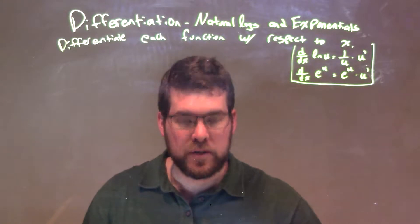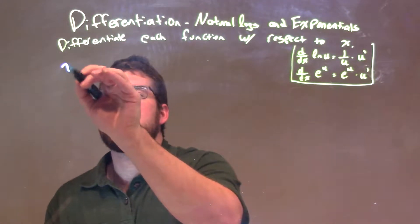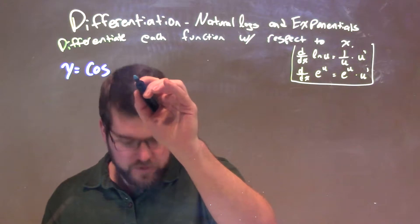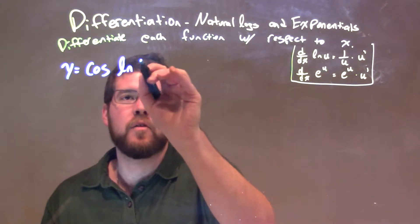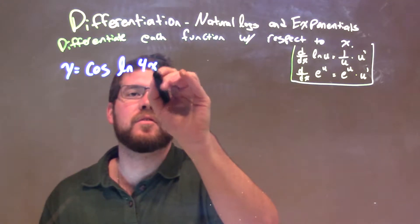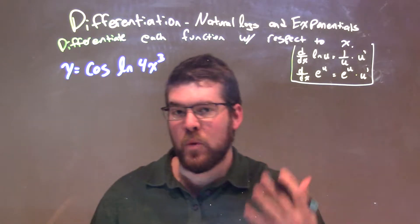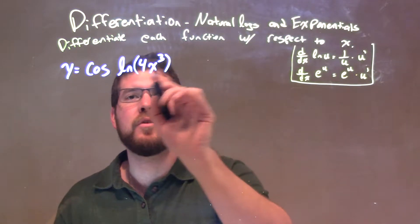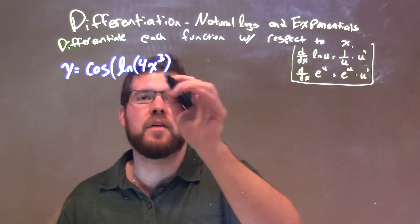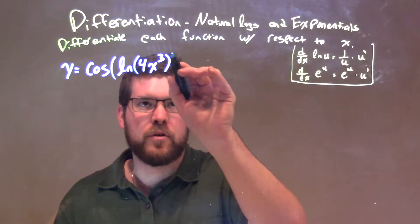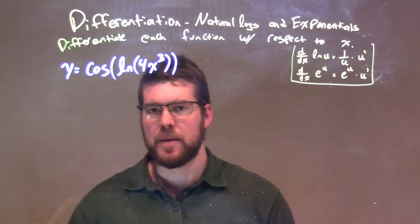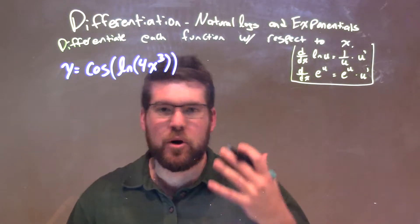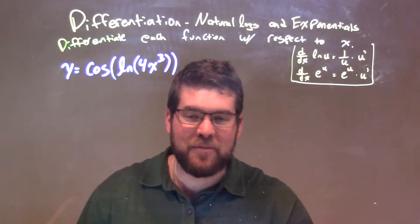If I was given this function, y equals the cosine of the natural log of 4x to the third power. If you want to see it with parentheses, we have natural log of 4x to the third, and the cosine would take the cosine of the natural log of 4x to the third power. From there, we need to derive this and then simplify.